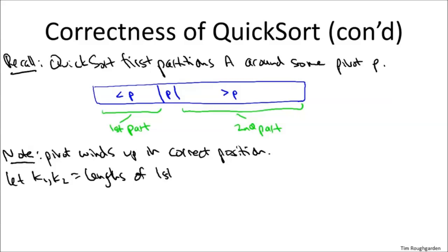So now to apply the inductive hypothesis, which you'll recall is a hypothesis about how QuickSort operates on smaller subarrays, let's call the length of the first part and the second part of the partitioned array K1 and K2, respectively. Now crucially, both K1 and K2 are strictly less than n. Both of these two parts have length strictly less than that of the given input array A. That's because the pivot in particular is excluded from both of those two parts. So they can have at most n-1 elements.